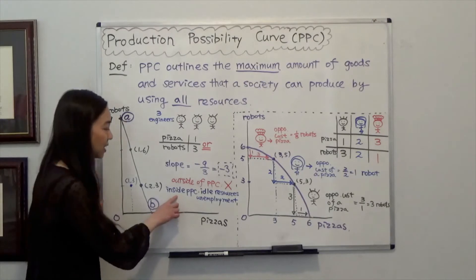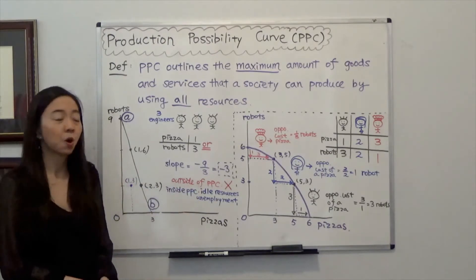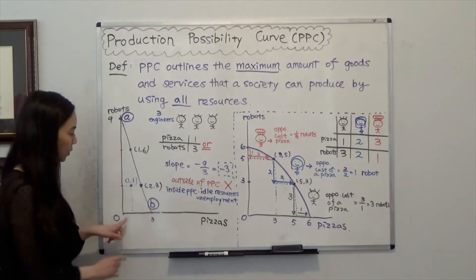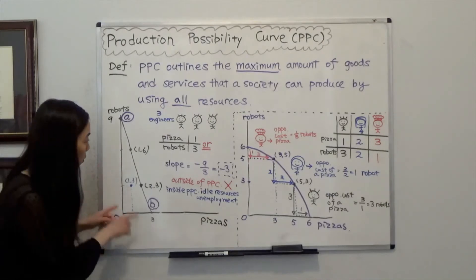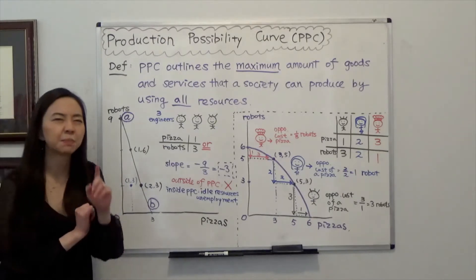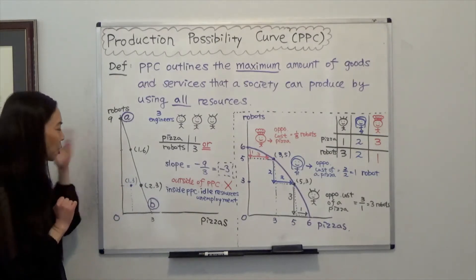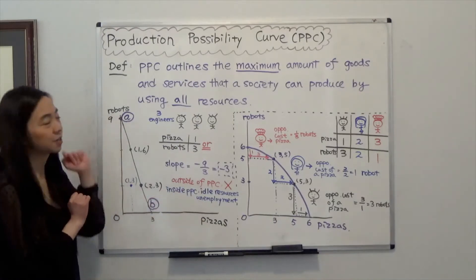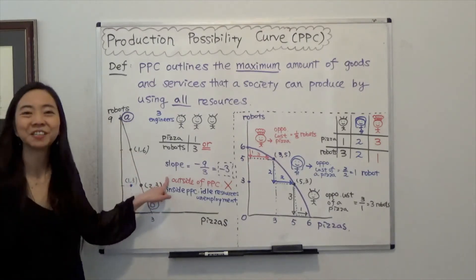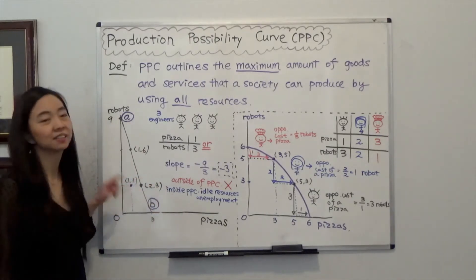Any point inside the PPC is possible, but also suggests idle resources or unemployment. For example, at point 1-3, meaning 1 pizza and 3 robots, one engineer is making 1 pizza, another engineer is making 3 robots, and the third engineer couldn't find a job in either the kitchen or the factory — so we have unemployment. The PPC therefore tells us: opportunity cost (the slope), scarcity (outside the PPC is impossible), and unemployment (inside the PPC).